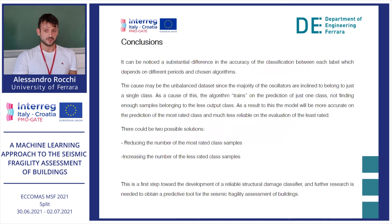These are just partial conclusions, as this is a first approach to the problem. It can be noticed that there is a substantial difference in classification accuracy between each label, which depends both on the building period and the chosen algorithm. The cause may be the unbalanced dataset, since the majority of the oscillators tend to belong to just a single class — either collapse or non-collapse. As a result, the algorithm strains on predicting just one class, not finding enough samples from the less represented class. There are two possible solutions: reducing the number of samples from the most weighted class, or increasing the number from the less weighted class. This is just a first step toward developing a reliable structural damage classifier, and further research is needed to obtain a predictive tool for seismic fragility assessment.